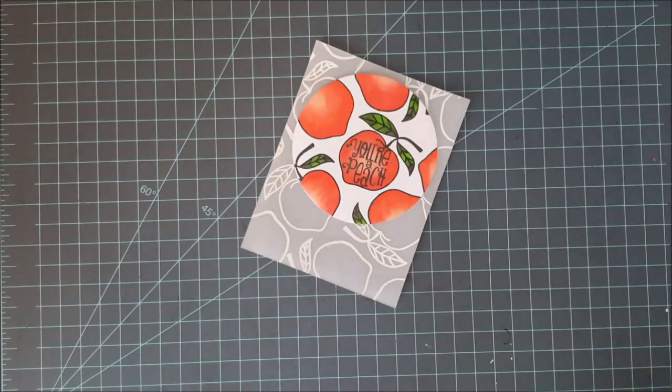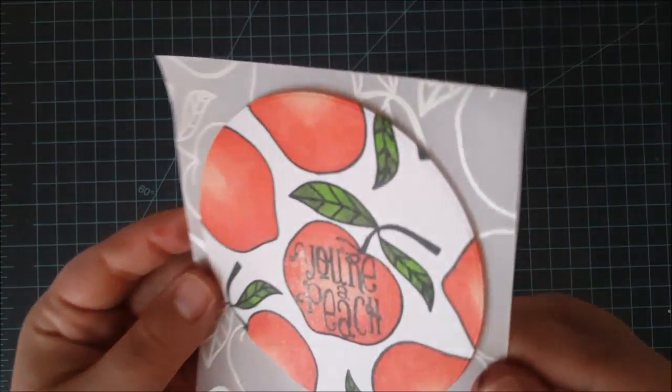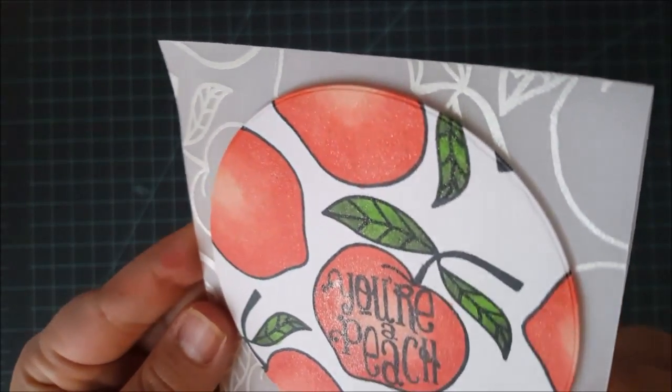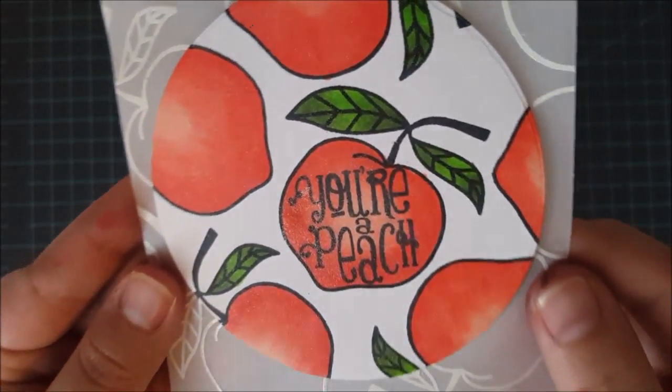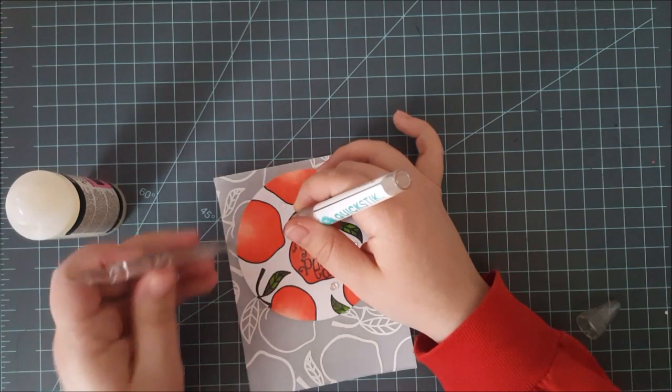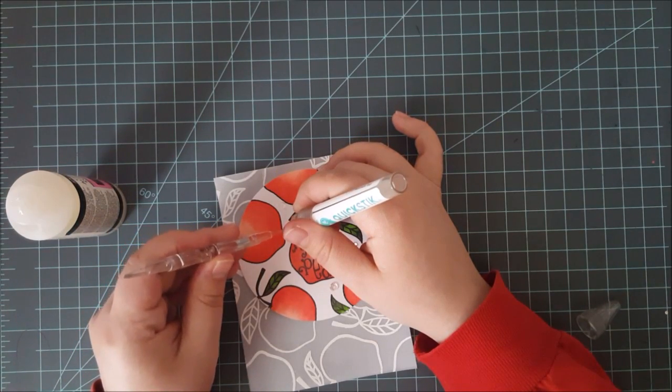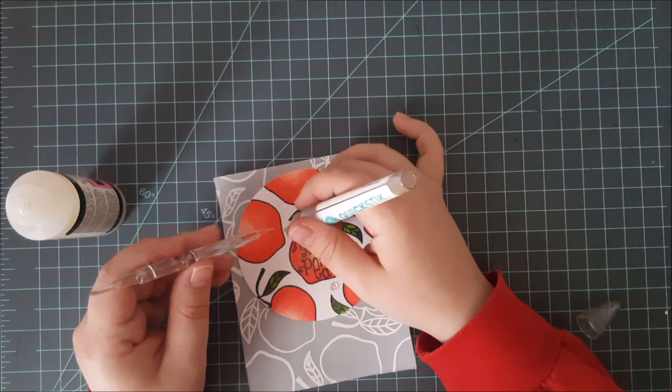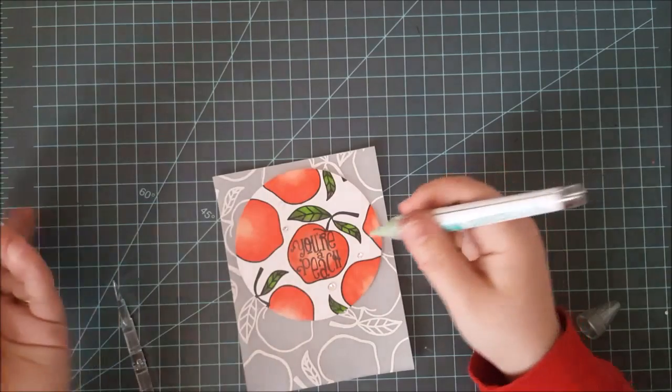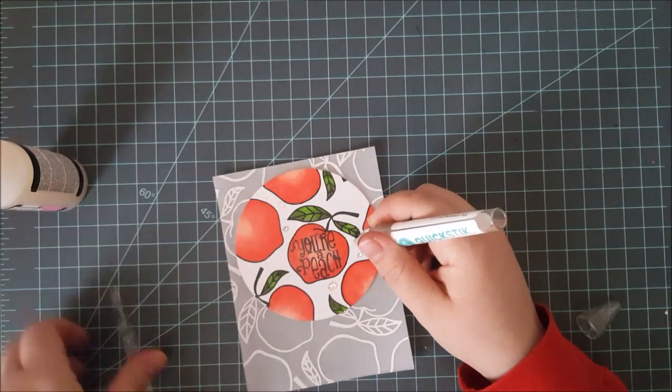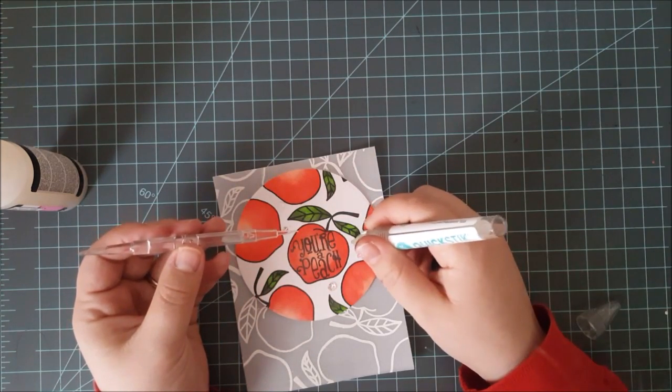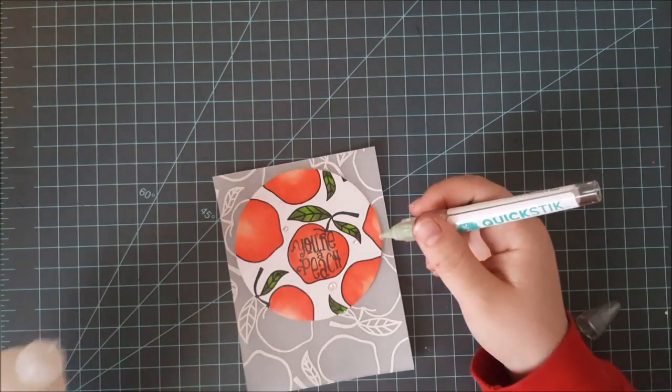To finish this card off, I wanted to add a little bit of sparkle, so I am coating those peaches liberally with some Wink of Stella clear glitter brush pen. There you can see the sparkle it gives, I really coated those things so there is a lot of sparkle on this. Then I also wanted to add just a few moonshine sequins. These are from Simon Says Stamp and I used the medium and the very smallest size sequins. Those are my favorites. I am just gluing those down with glossy accents and using my quick sticks tool to help me out. That finished off the card for today.